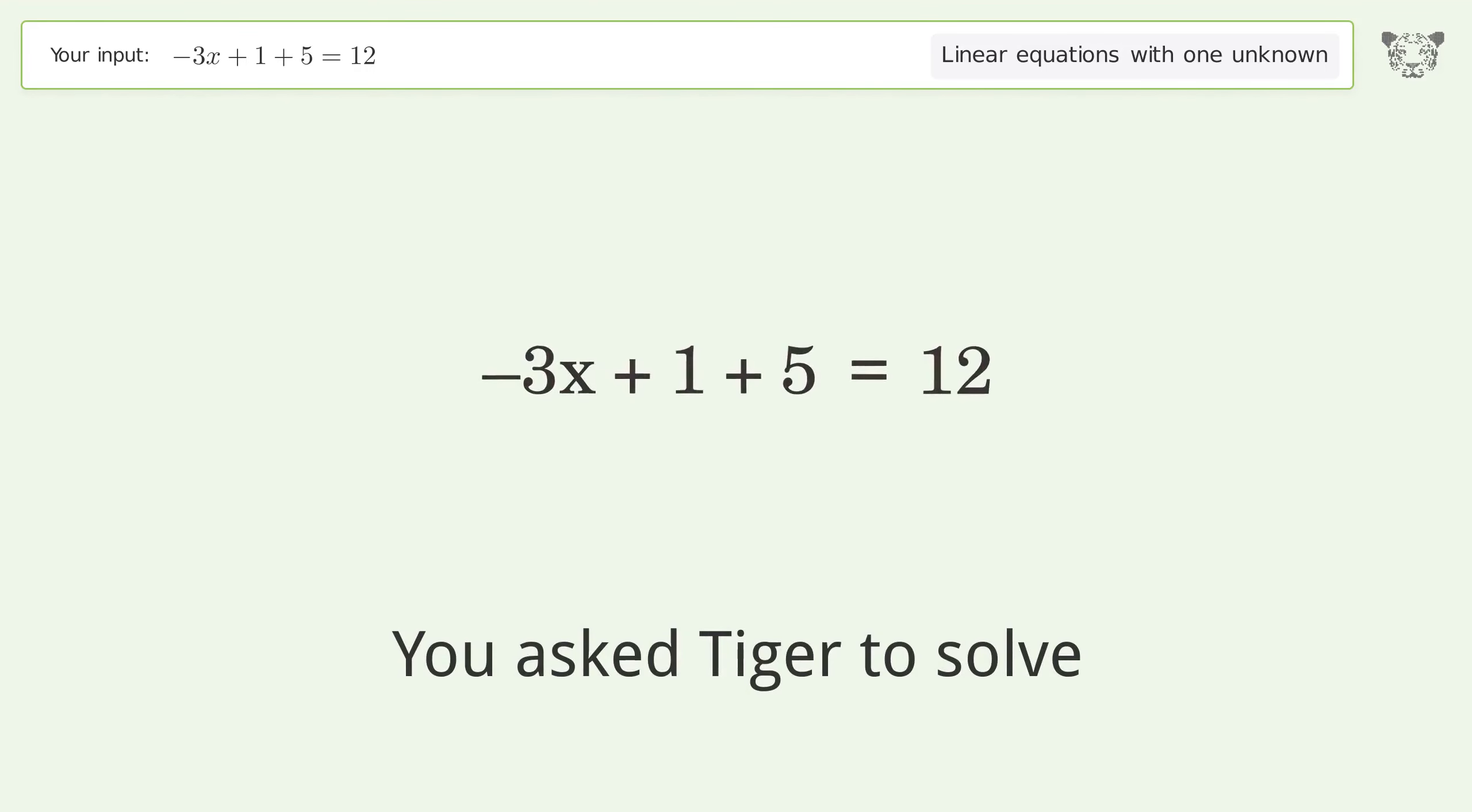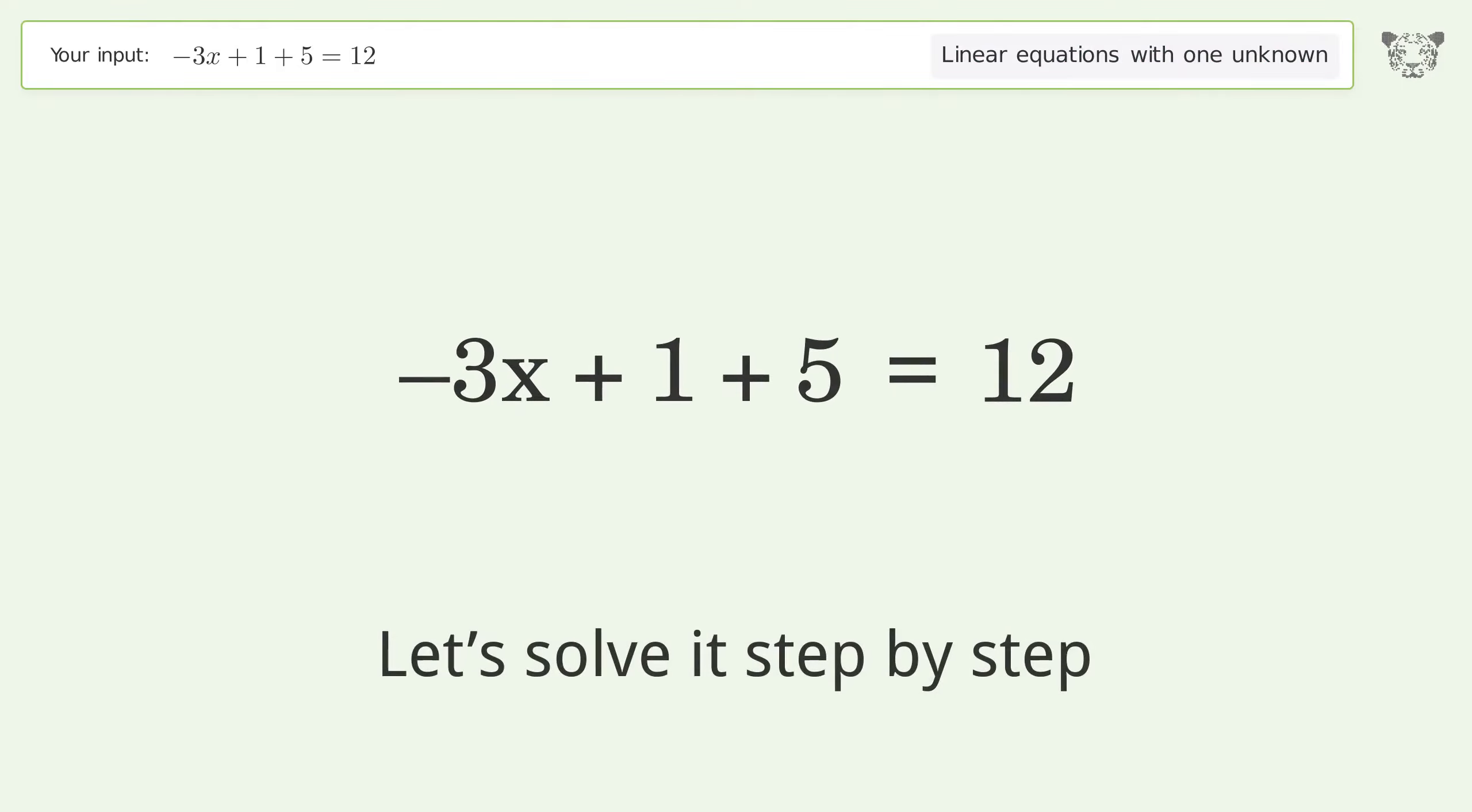You ask Tiger to solve this. It deals with linear equations with one unknown. The final result is x equals negative 2. Let's solve it step by step. Simplify the expression. Simplify the arithmetic.